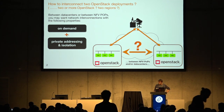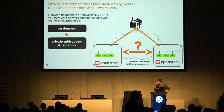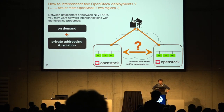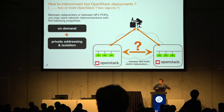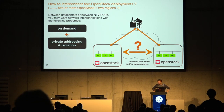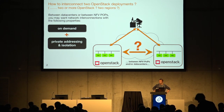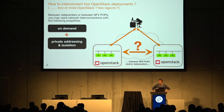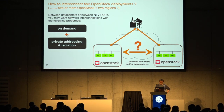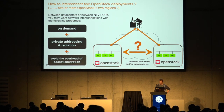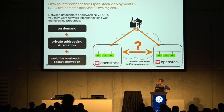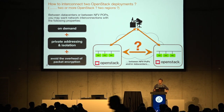That's a pretty common need. You can do these two things today with a solution such as Neutron VPN as a service. But behind the scene, it involves using IPsec, which has a significant performance overhead. You could want a solution that would be on demand, provide private addressing and isolation, and also avoid the overhead of packet encryption.